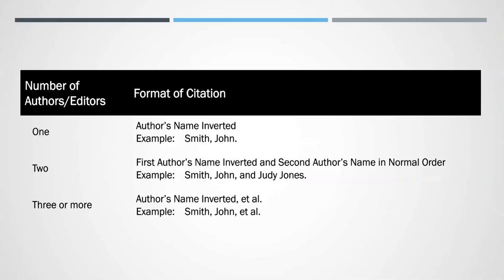When you have more than one author, use the word AND between their names and list the second author in common form, as shown in the example with two authors. When you have three or more authors, invert the first author's name, then use et al., which means 'and others.' The 'al' is always followed with a period when used in the citation or in an in-text citation.